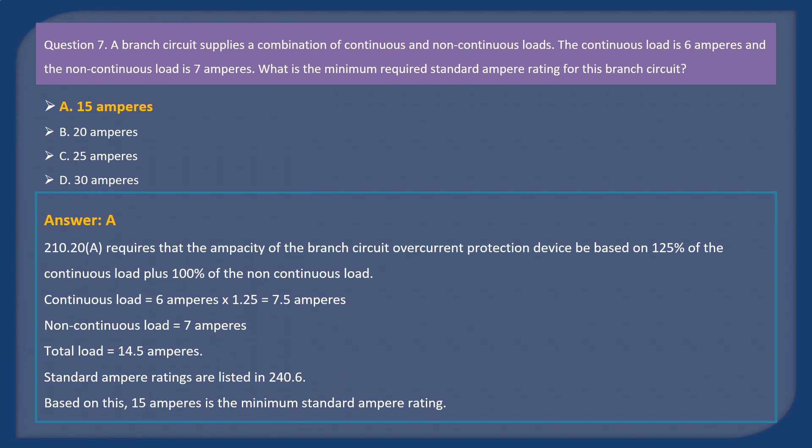Answer: A. Explanation. 210.20A requires that the ampacity of the branch circuit overcurrent protection device be based on 125% of the continuous load plus 100% of the non-continuous load. Continuous load equals 6 amperes times 1.25 equals 7.5 amperes. Non-continuous load equals 7 amperes. Total load equals 14.5 amperes. Standard ampere ratings are listed in 240.6. Based on this, 15 amperes is the minimum standard ampere rating.